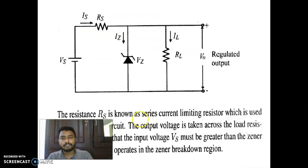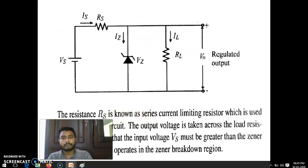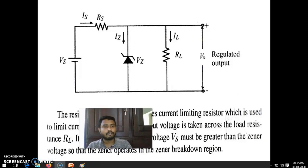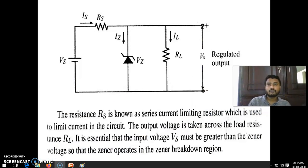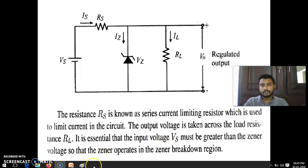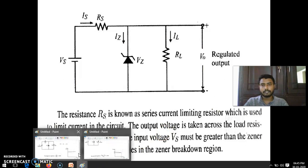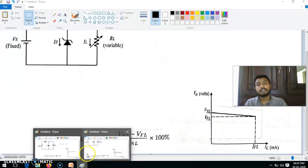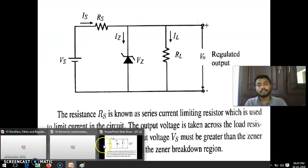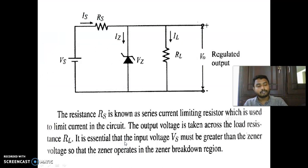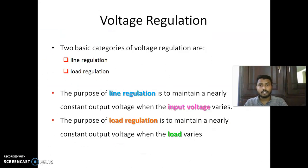Now let us see the operation of the Zener diode as a voltage regulator. We are taking an example and going to analyze the circuit. Before that, we need to understand one more thing: there are two types of voltage regulation — line regulation and load regulation.